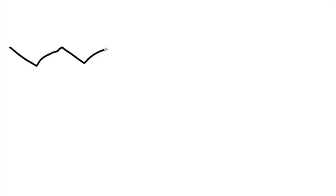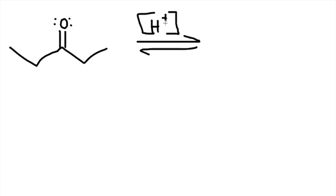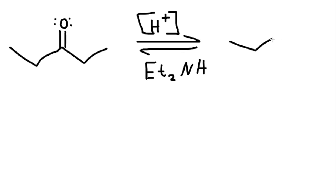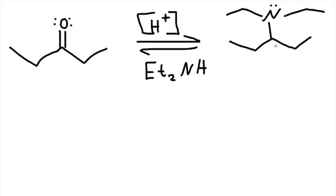Let's do another example, but this time with a different reagent. We have this ketone — this is a reversible reaction as well. We add diethyl secondary amine: two ethyls, still a secondary amine. Redraw the structure: where the oxygen is, put a single bond, nitrogen connected with two ethyls. Add a double bond anywhere in this case because both sides are equally substituted.